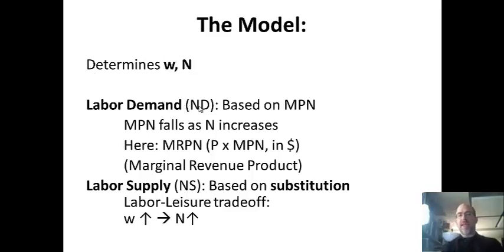So the first curve is labor demand, ND. Again, I call labor N. It's based on MPN, which is the marginal productivity of labor. So it's the output given by one more input of labor. If you add a worker, how much additional output do you get? And because of diminishing marginal returns, as labor increases, marginal productivity of labor falls. You might have seen that in a principles class. Adding workers to a factory floor, for example, eventually capital is limited. You run out of machines and those workers are not as productive.